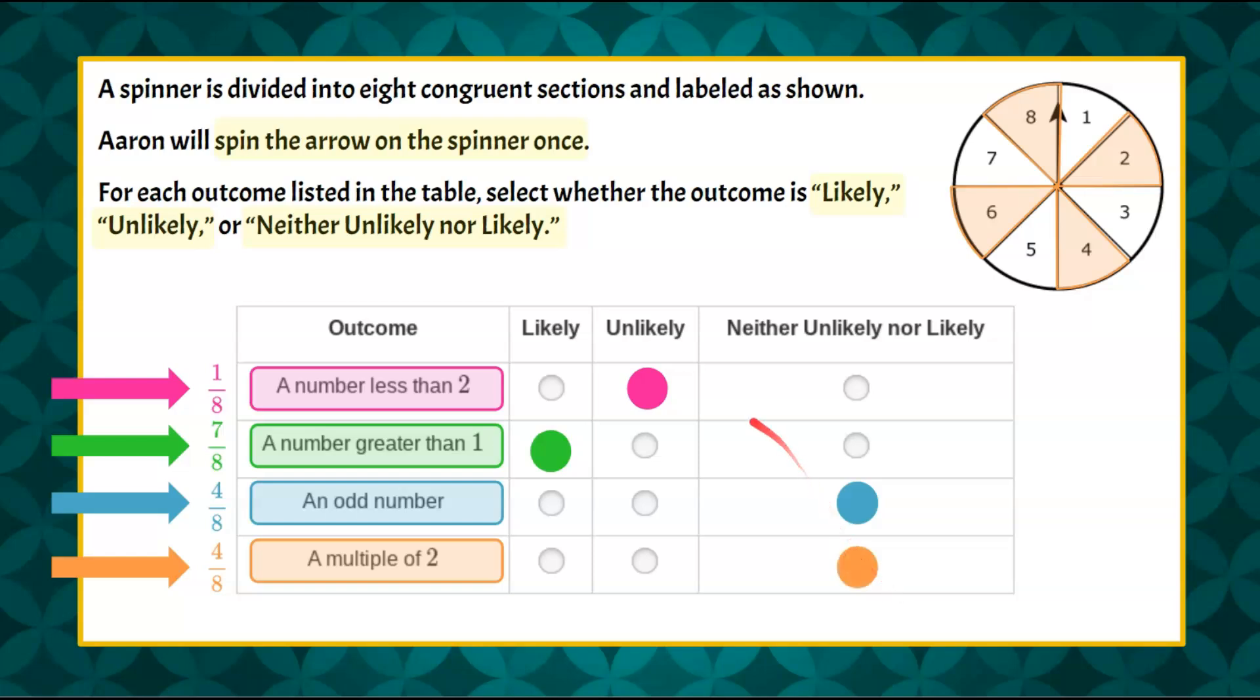So here you have it. A number less than two is unlikely because it's a one in eight chance. A number greater than one is likely because all but one is a possible outcome, seven out of eight. And then an odd number and a multiple of two are both fifty-fifty, so they are neither unlikely nor likely.